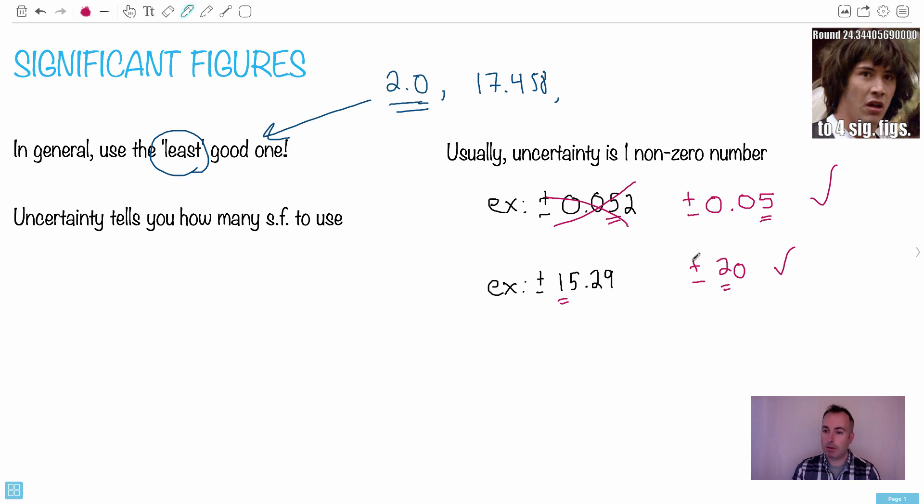So first of all, make your uncertainty a non-zero number. Next, once you know the uncertainty is a non-zero number, it's the uncertainty that drives how many significant figures you should use, not the other way around. So I'll give you a few examples.